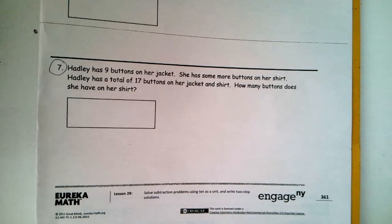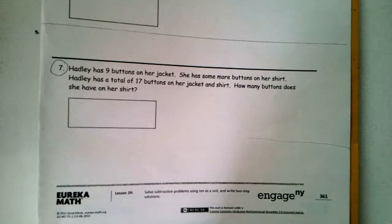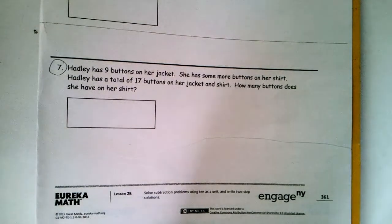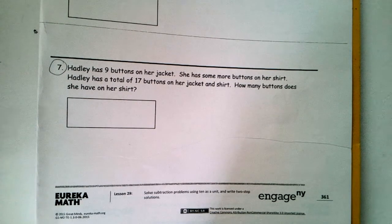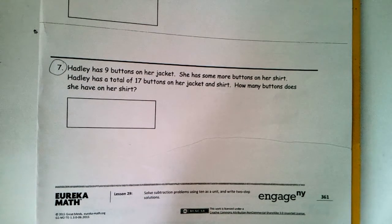Hadley needs to have a number sentence in her story problem, please. And, you need to show a strategy on how you solve your number sentence. Here's your story problem. Hadley has 9 buttons on her jacket. She has some more buttons on her shirt. Hadley has a total of 17 buttons on her jacket and her shirt. How many buttons does she have on her shirt? The first thing I think to myself is, do I know the whole number here?